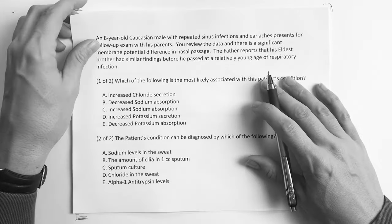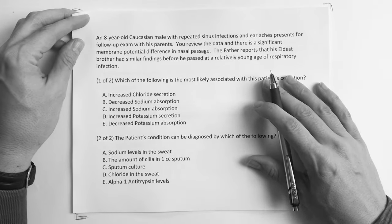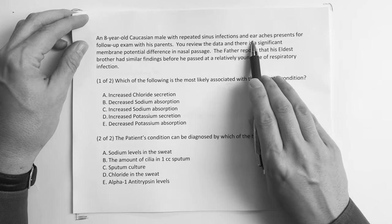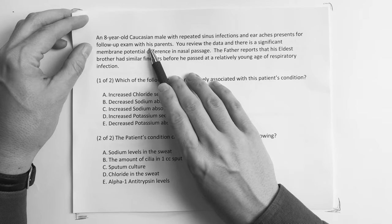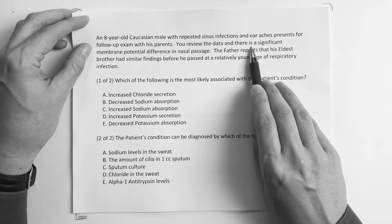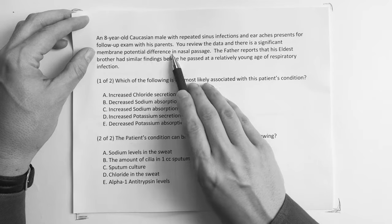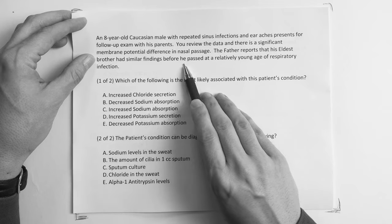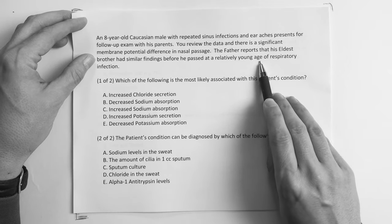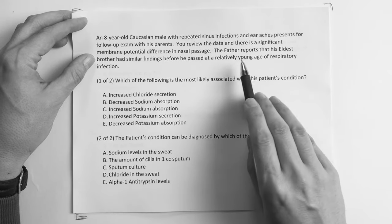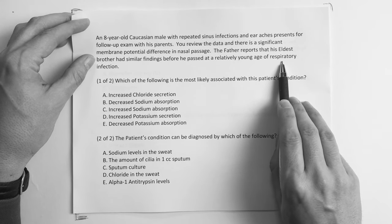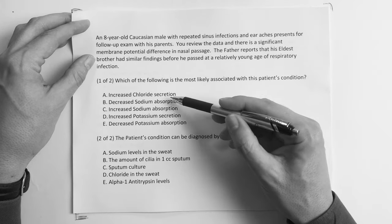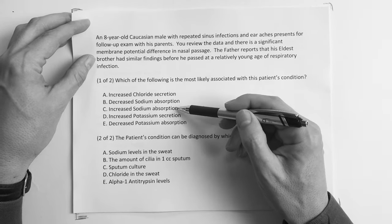All right guys, so here's our genetics questions and we're going to start with this one. It says an eight-year-old Caucasian male has repeated sinus infections and earaches, presents for follow-up exam with parents.